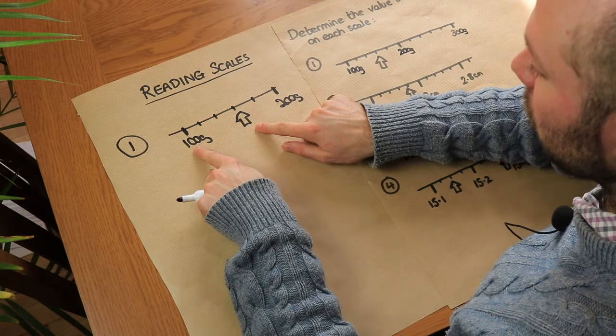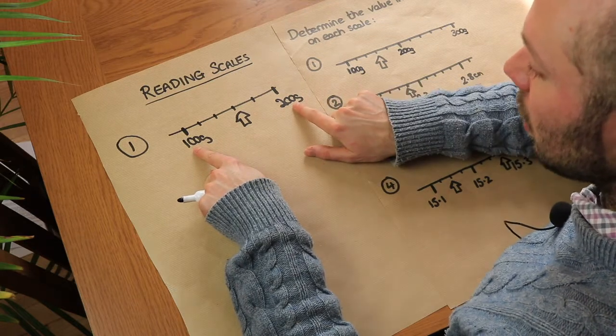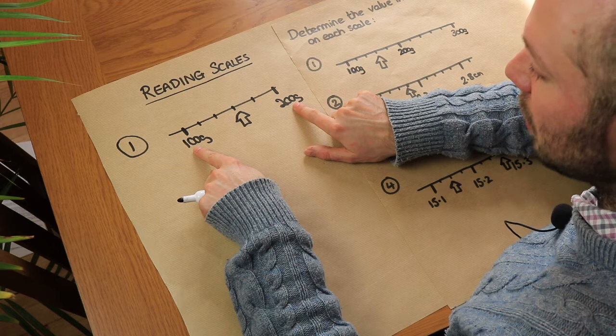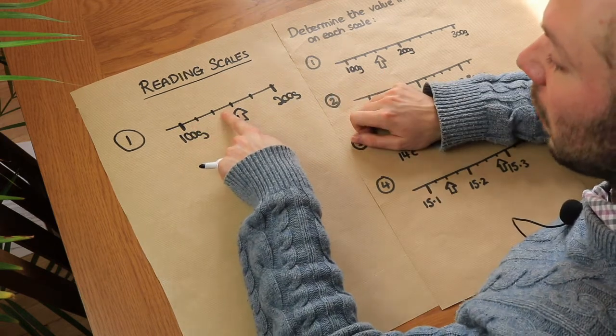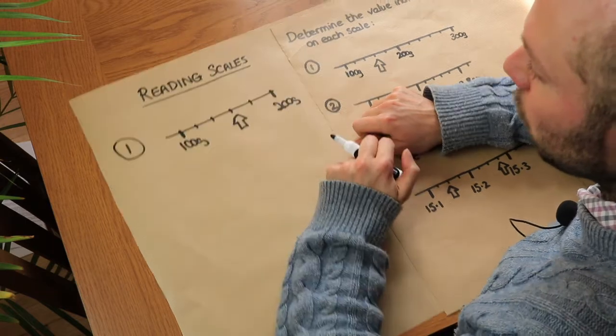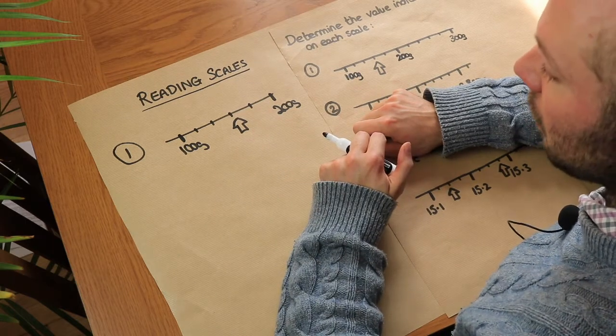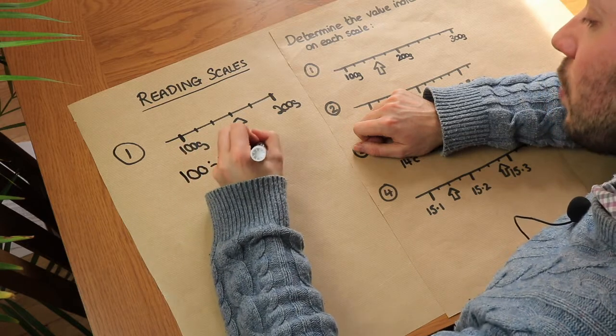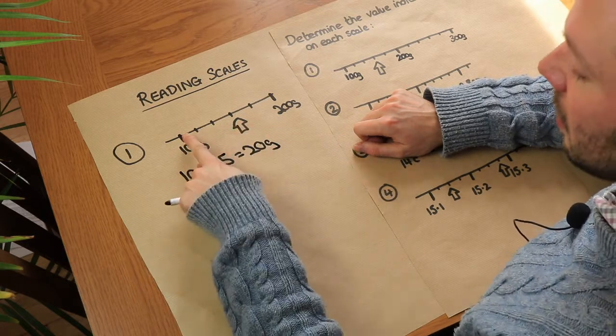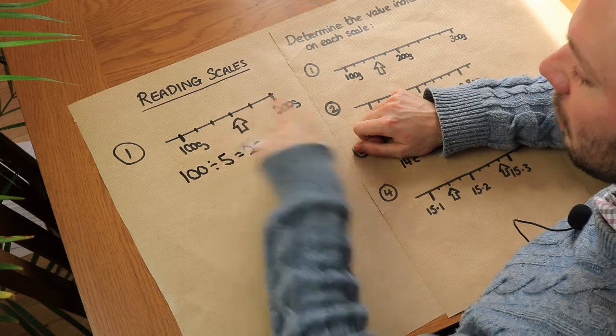Now what's the difference between 100 grams and 200 grams? Well there's 100 grams difference between them and that 100 grams difference is being divided into five regions. Now what's 100 divided by five? Well 100 divided by five is equal to 20 grams and that means each region is worth 20 grams.